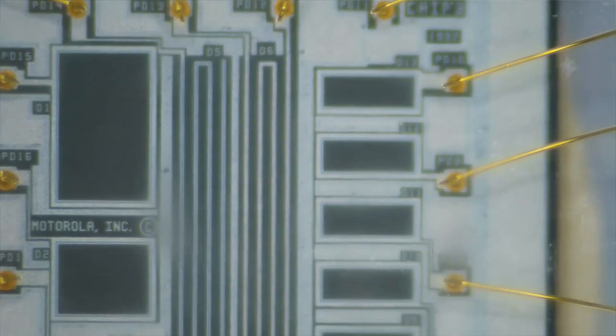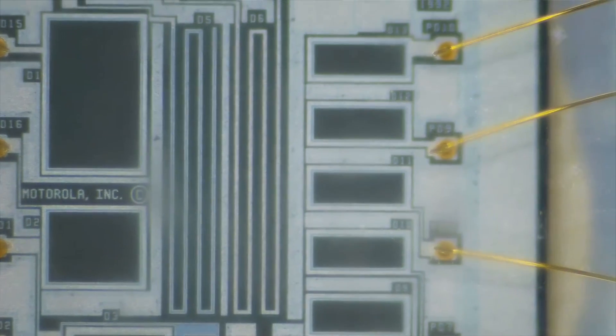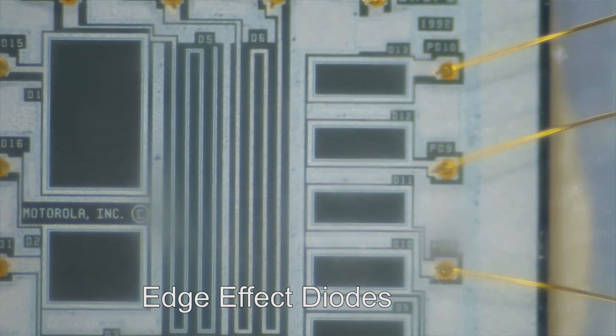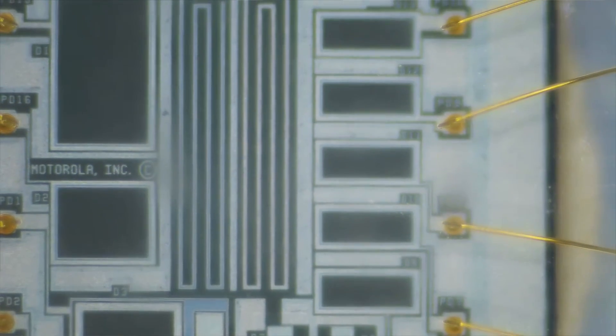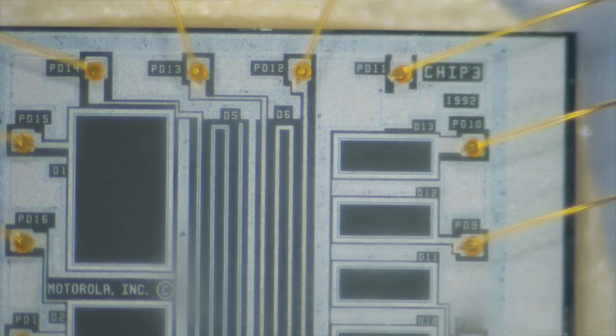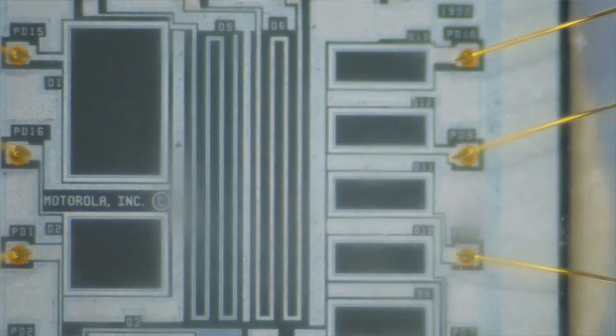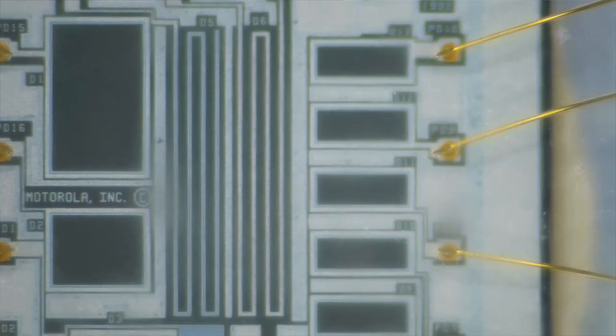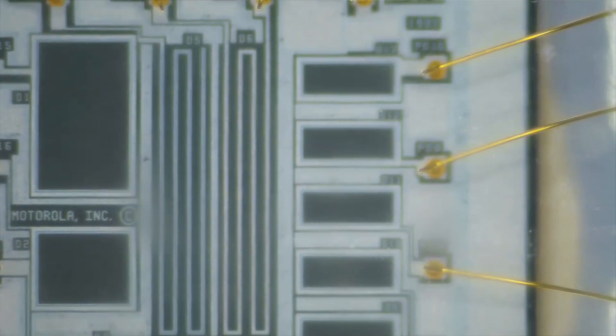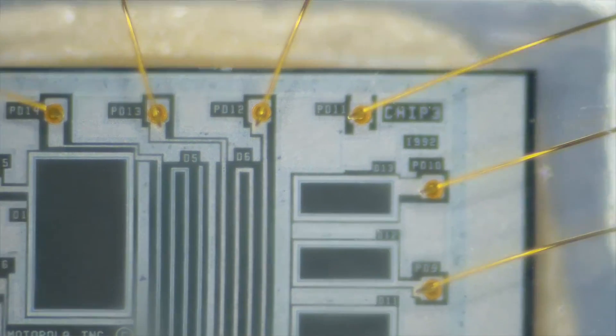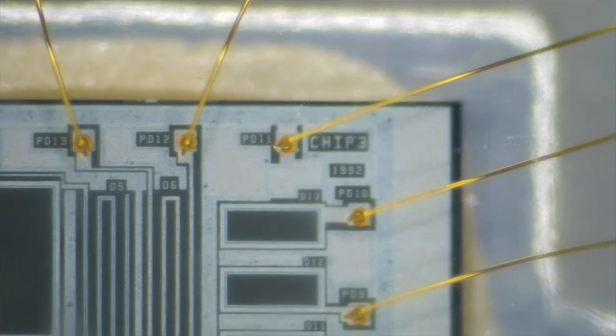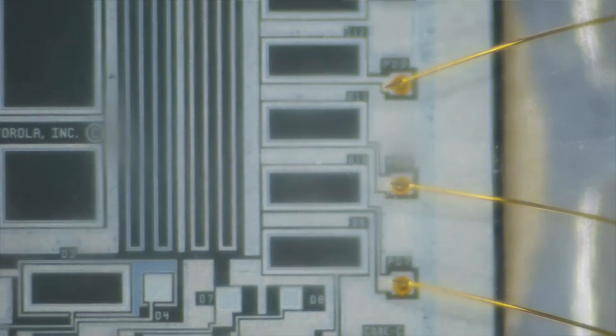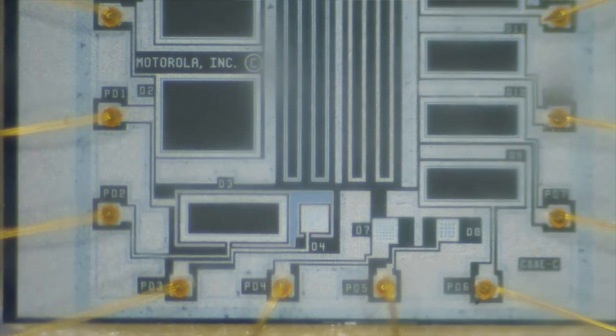These ones here that look kind of like thin film resistors are what are called edge diodes. They have most of the diode covered over with the metal layer that makes the contact up to pins P13 and P14. They rely on light penetrating around the side of the silicon to actually get the photoelectric effect.